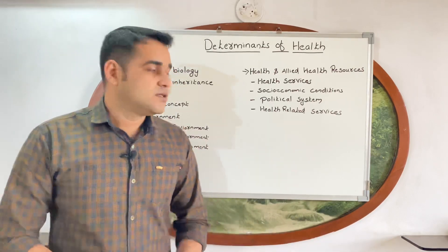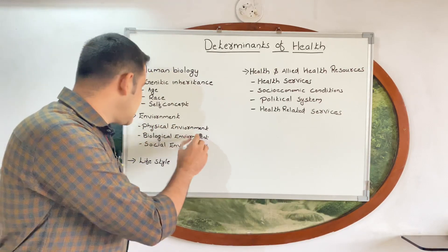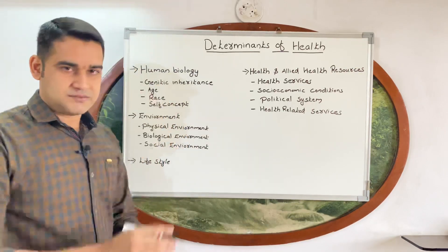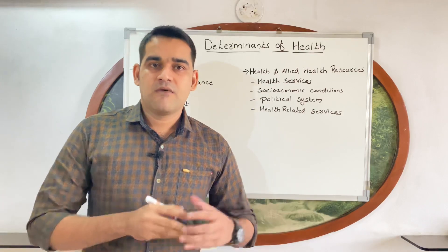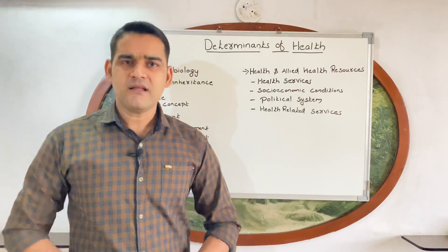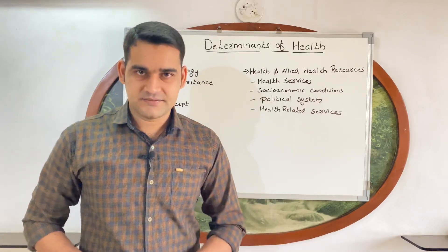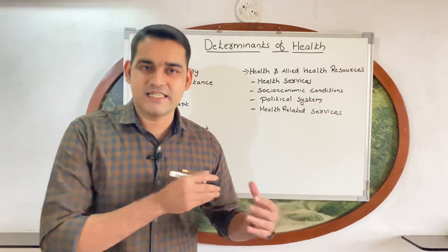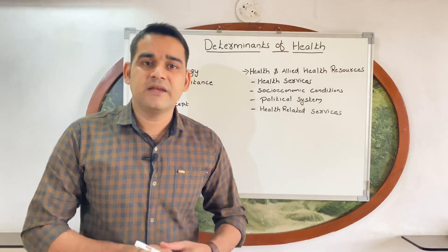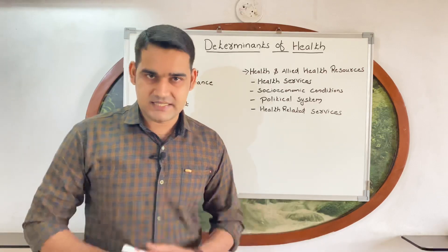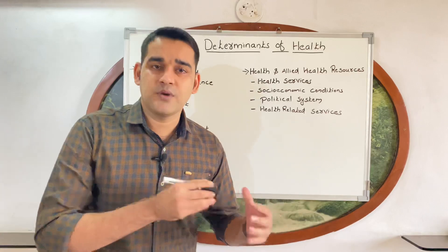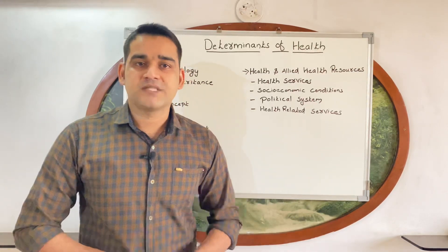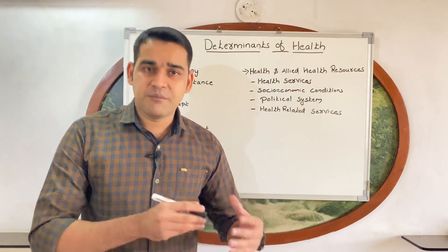Next is environment — the place where the person is living. Under environment you can see physical environment, biological environment, and social environment. Physical environment includes temperature, climate, and certain radiations, as well as air pollution, water pollution, and noise pollution, which can lead to certain diseases.